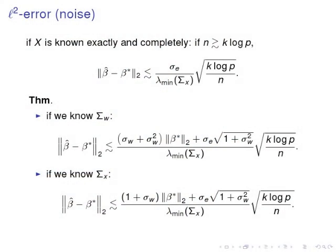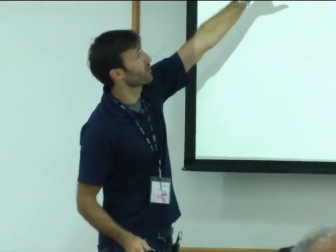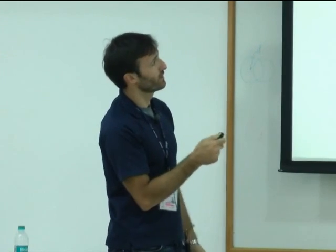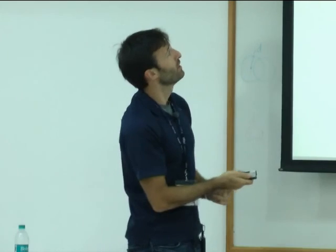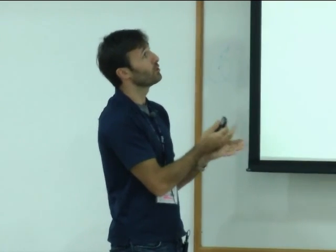So for example the kind of results we get are the following. So if X is known exactly and completely, not our setting, this is just for comparison, then the L2 bounds look like this. So these are the standard kind of state of the art bounds for low dimensional regression.